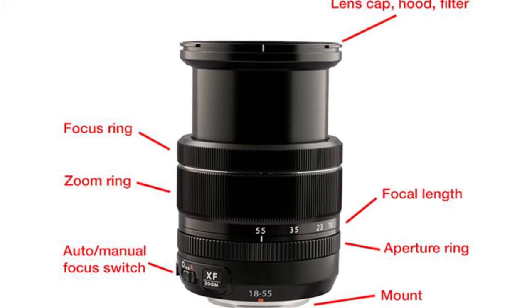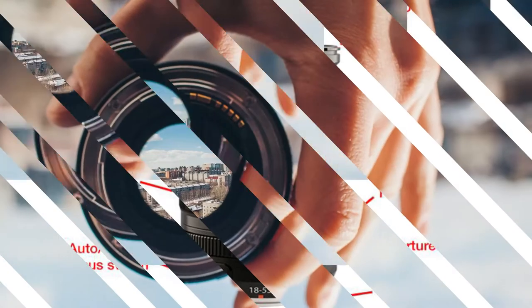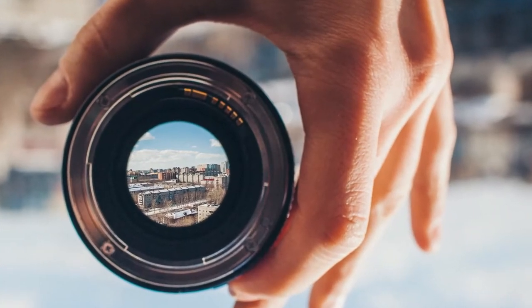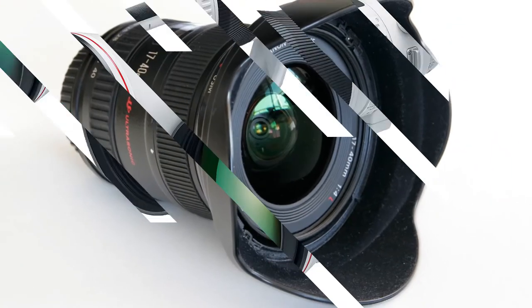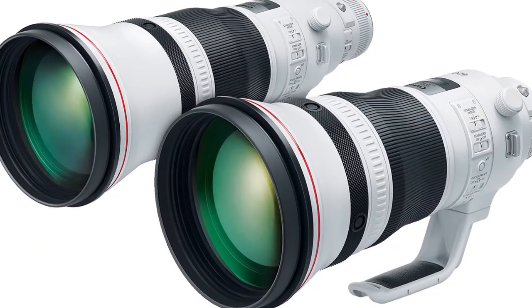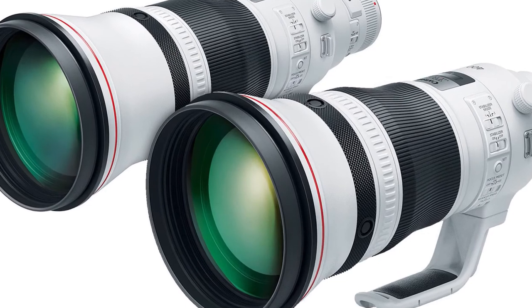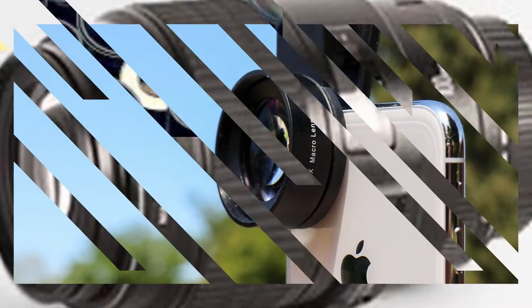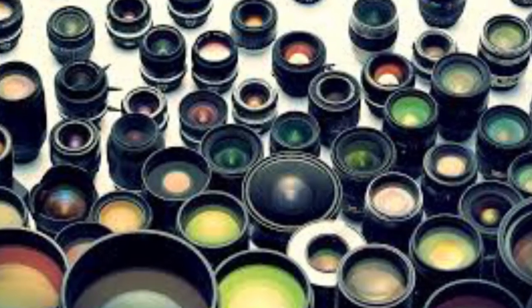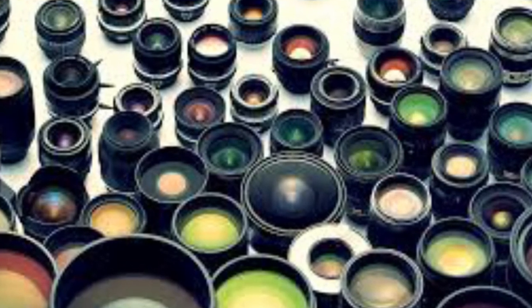Some basic types of lenses used with a camera are: normal, wide-angle, telephoto, and macro lens. Camera lenses are actually a combination of lens elements.